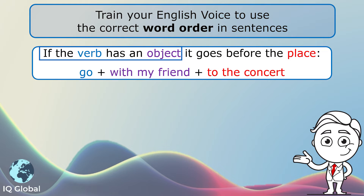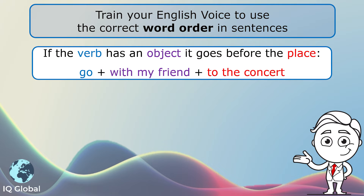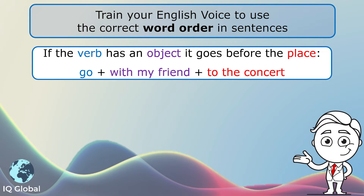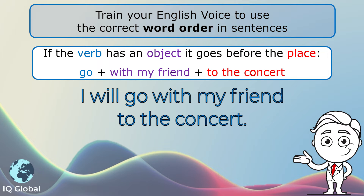If the verb has an object, it goes before the place. Have a look at the example: 'go' is the verb, 'with my friend' is the object, followed by 'to the concert' as the place. The object goes before the place. So I could say: 'I will go with my friend to the concert.'